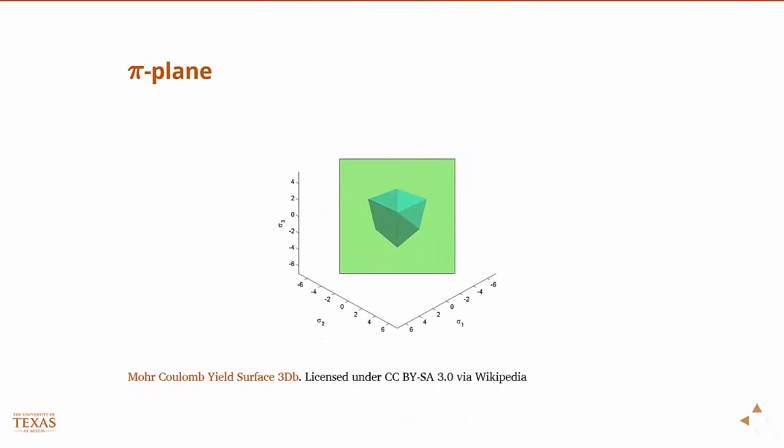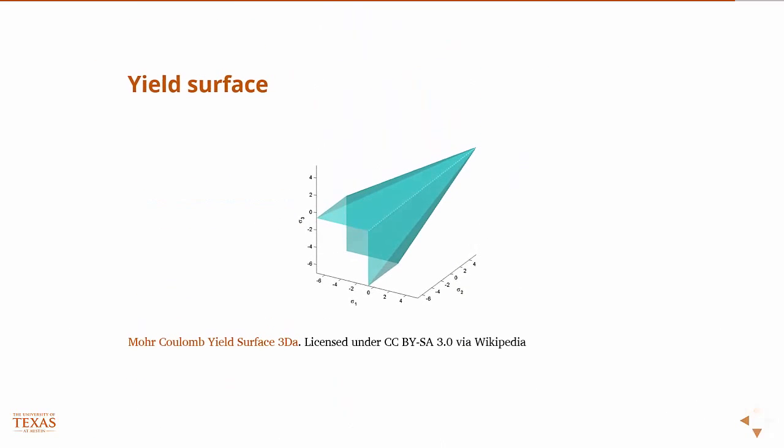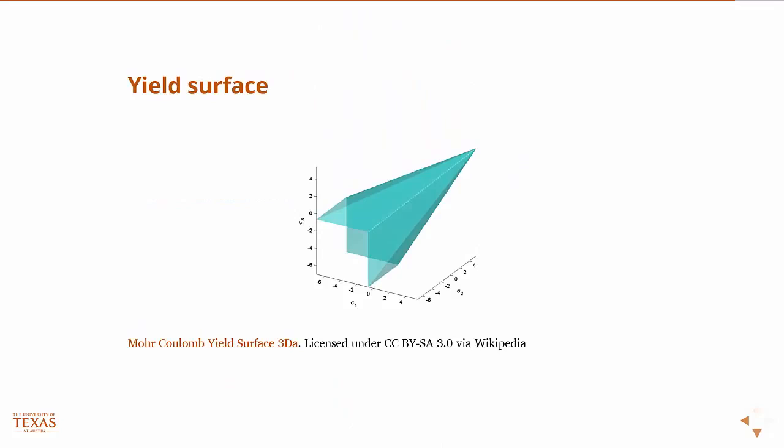And if we look right down the, it's called the pi plane. So this is the plane where sigma one equals sigma two equals sigma three. If we look right down it, then you get this hexahedron type shape thing. So basically what we're saying here is in fully three dimensions, considering all three principal stresses, the state of stress has to be, in terms of the principal stresses, has to be inside that conical thing or the rock will fail.